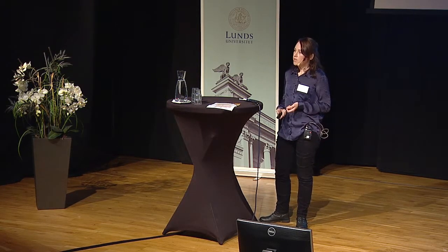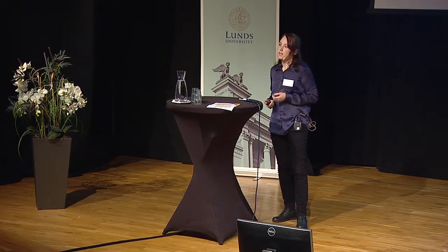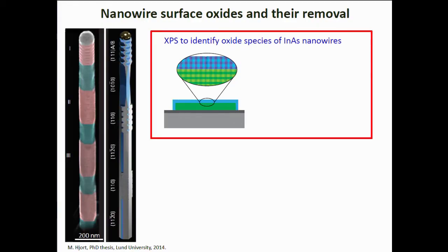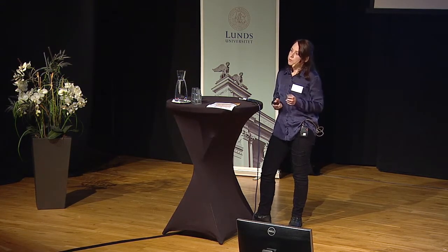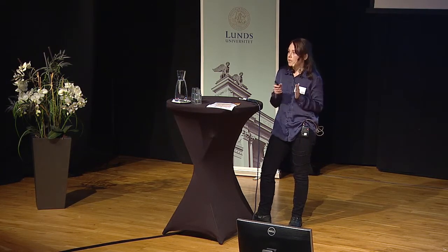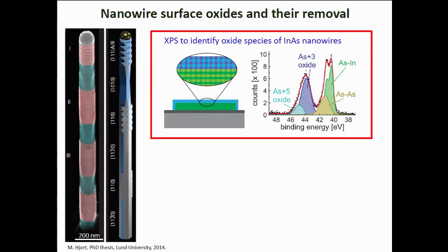XPS is a very surface-sensitive technique, so it's a great method to get detailed information on the surfaces of our nanowires. You can see examples of an indium arsenide nanowire along with an illustration showing all the different types of surfaces which can be possible during the growth process. We can use XPS to identify particular oxide species which form on the surface of your nanowires. We take the chemical fingerprint, zoom in on a very particular part of it, and by looking at individual peaks, we can extract information based on their energy and distribution about whether these are oxide species or due to the underlying indium arsenide nanowire.